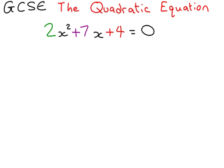Now, the quadratic equation is a formula that's given to you on your exam paper and it will automatically solve for you any quadratic equation that you can think of. And by quadratic equation, we mean something that looks like this. It's got something with x squared, something with x, and a number on its own.